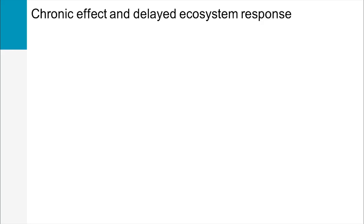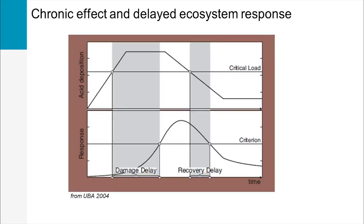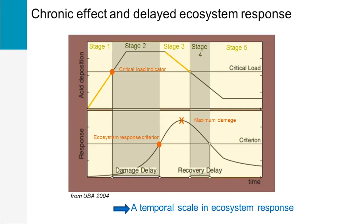To sum up, air pollutants have a chronic effect on ecosystems even if significant negative impacts are sometimes difficult to perceive. This is illustrated by the soil response to atmospheric deposition. The physico-chemical process of acid deposition from atmospheric fallout starts at stage 1 and reaches the critical load indicator at stage 2. Yet at this stage, the ecosystem response shows that no damage is likely to occur because its criterion has not been reached due to a time delay. At stage 3, although mitigation measures have been implemented to reduce air pollutants and acid deposition is decreasing, the ecosystem response and therefore the damage is maximum and continues until stage 4. The ecosystem is considered to have recovered at stage 5 only. Such time-dependent estimates are called target loads or dynamic critical loads.